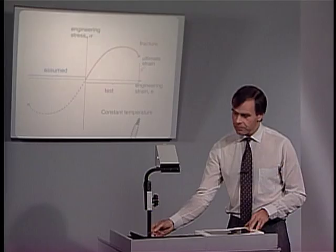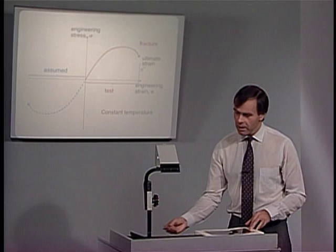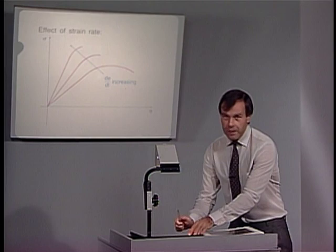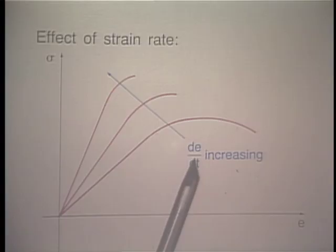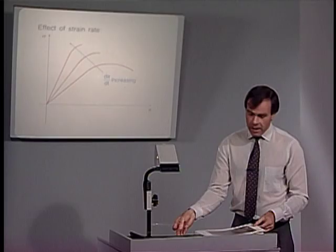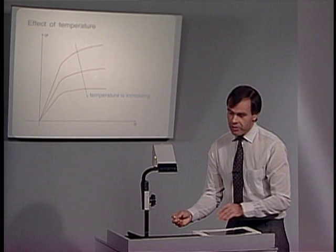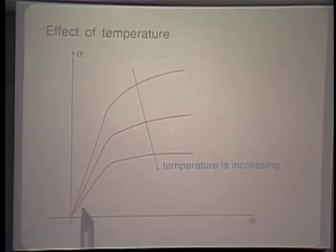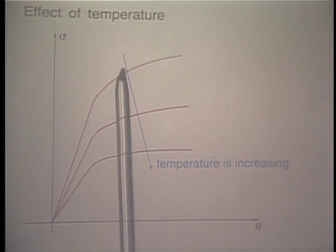The effect of strain rate is significant: as dε/dt increases, the test results change as shown schematically. There is also a temperature effect — as temperature increases (with each test performed at constant temperature), the stress-strain behavior changes, as indicated by the red curves. This represents the instantaneous response of the material.